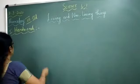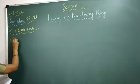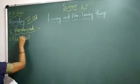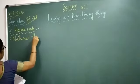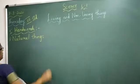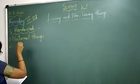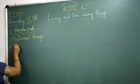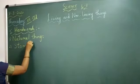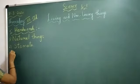Write neatly. First one: natural things. N-A-T-U-R-A-L, T-H-I-N-G-S, natural things. Second one: stomata. S-T-O-M-A-T-A, stomata.